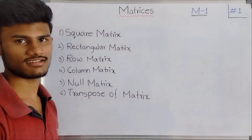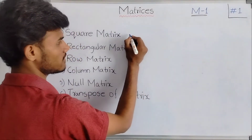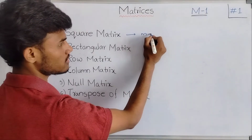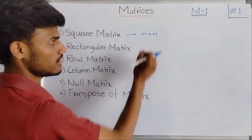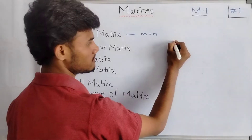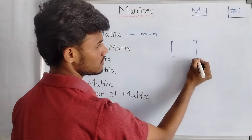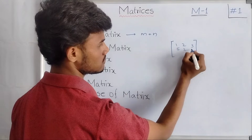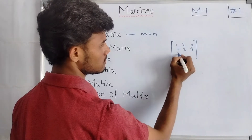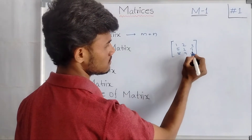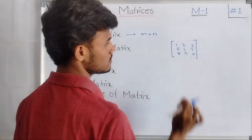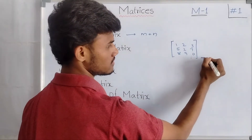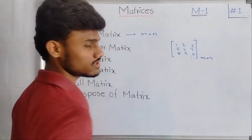The first type of matrix is the square matrix. In this matrix, the number of rows equals the number of columns, that is M equals N. When the number of rows and the number of columns are equal, that means M equals N, this type of matrix is called a square matrix.